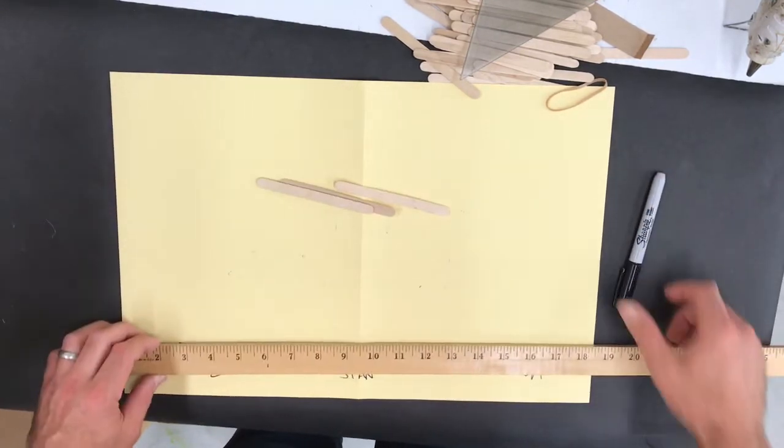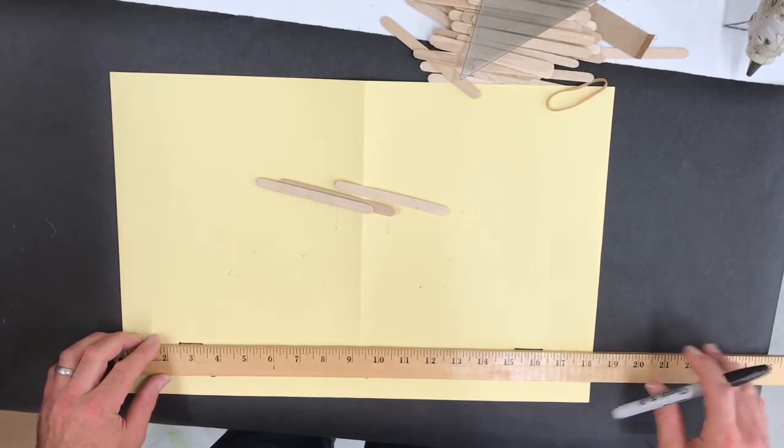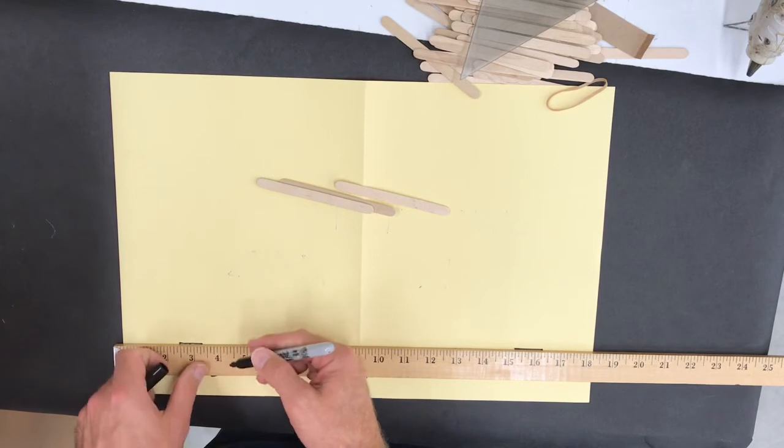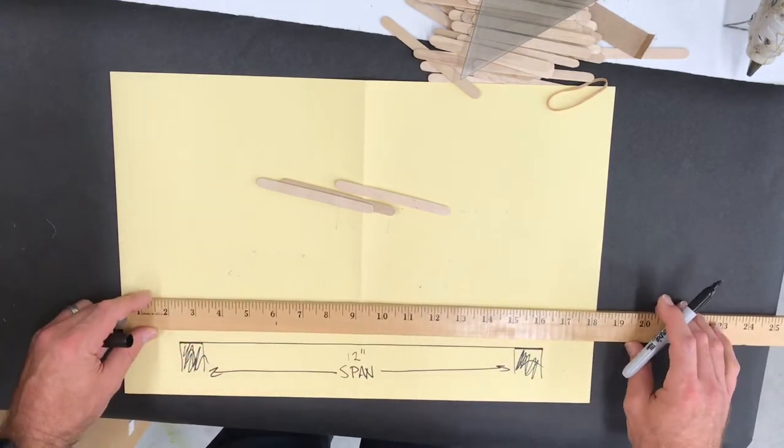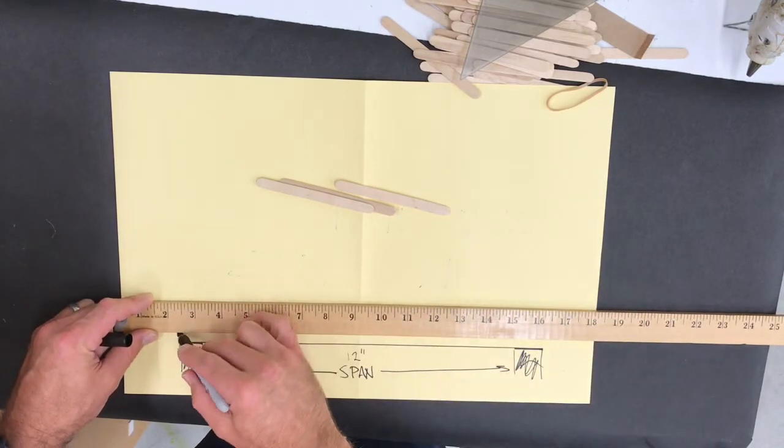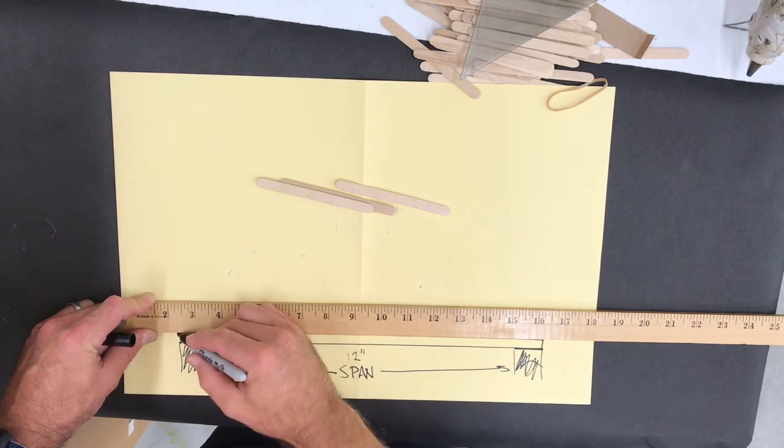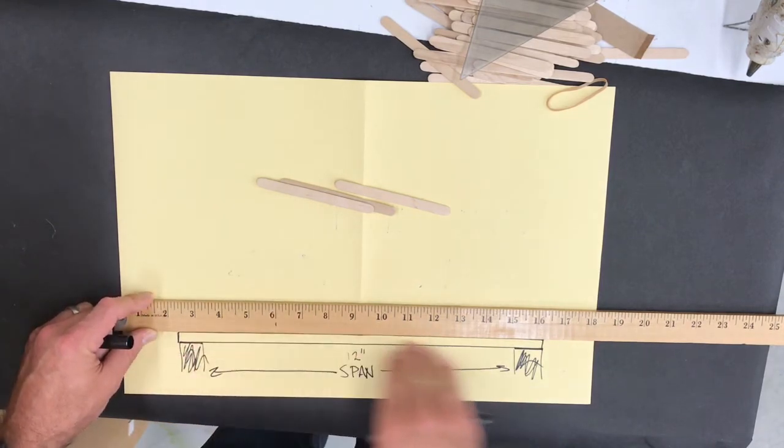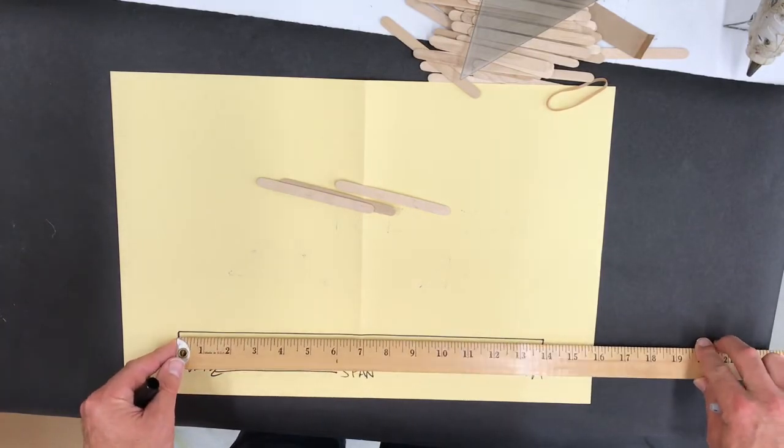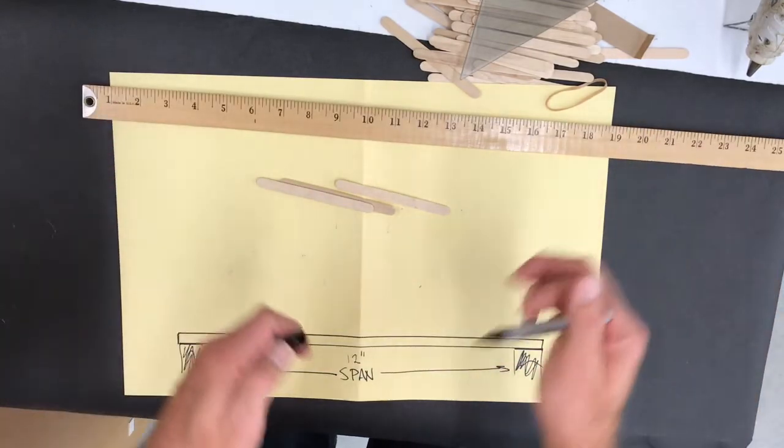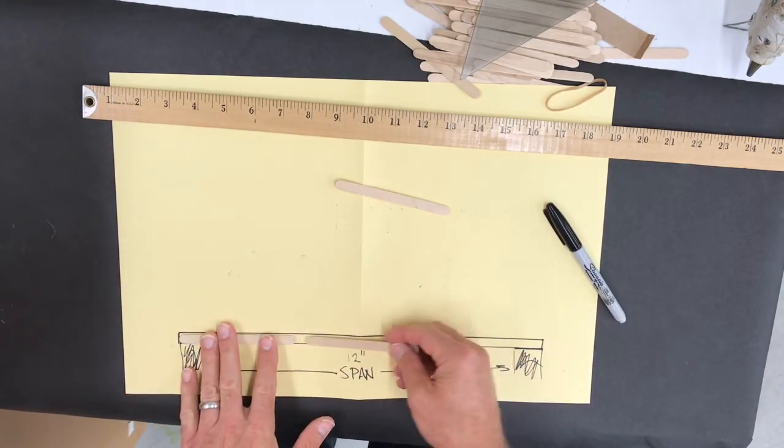And then I'm going to draw the bottom beam. Now we said the length of your bridge has to be 13 to 15 inches long. So that's the bottom beam made up of popsicle sticks. We're going to double check the length here. But if we made a solid beam of popsicle sticks glued together, it would be 14 inches long. That's perfect. That's right between 13 and 15.